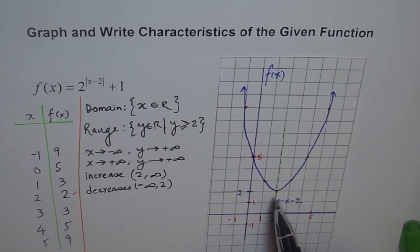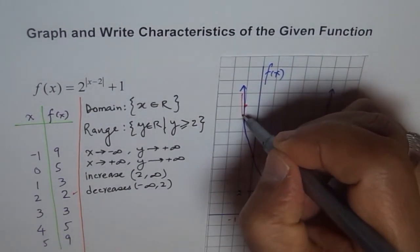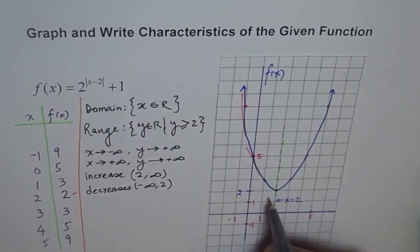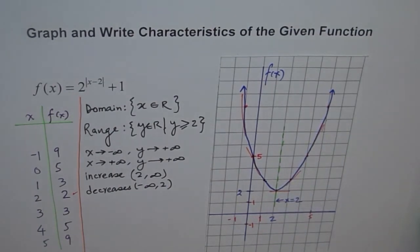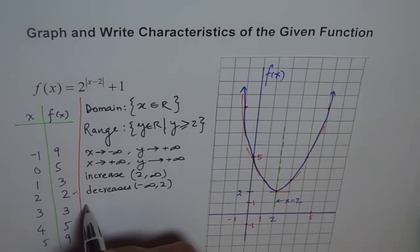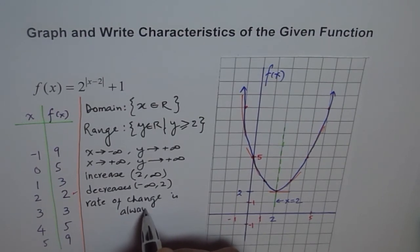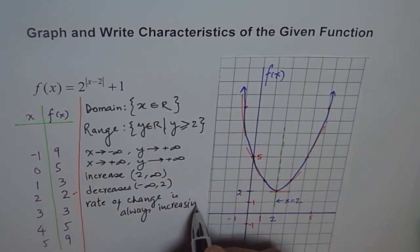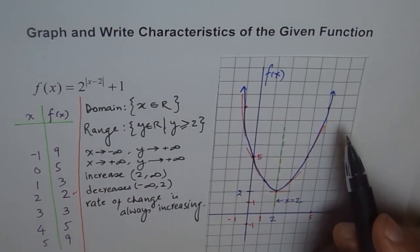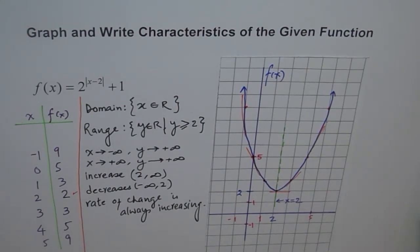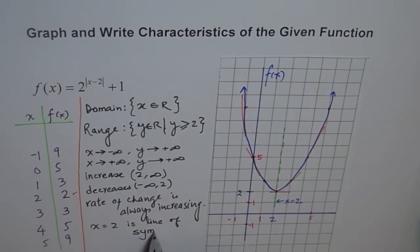Regarding rate of change: because of the shape of the graph, the rate of change goes from very negative on the left, becomes less negative, reaches 0 at the vertex, then becomes positive and increasingly more positive on the right. So the rate of change is always increasing. We also confirm that x equals 2 is the line of symmetry. These are the key characteristics of the given function.